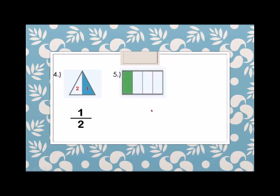Next example: we have a rectangle. How many shaded parts? 1. So the numerator is 1. And the parts of this rectangle are 1, 2, 3, and 4. So therefore, the denominator is 4.